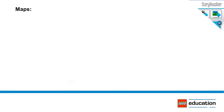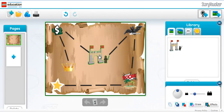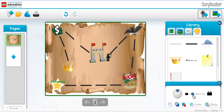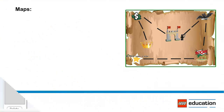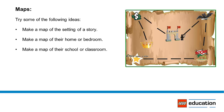Maps: Maps communicate information about location and distance. Stylized maps can be used to visualize regional information such as altitude, weather patterns, or demographics. Try some of the following ideas: have students make a map of the setting of a story, a map of their home or bedroom, or a map of their school or classroom.